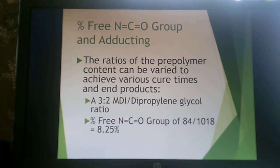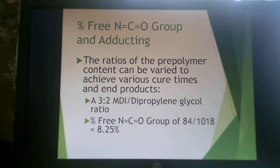If you have the ratios of a pre-polymer content, they can be varied to achieve various cure times. If you have a 3 to 2 MDI to dipropylene ratio, you further reduce the free NCO. You can really tailor your cure conditions and your systems based on your pre-polymer.